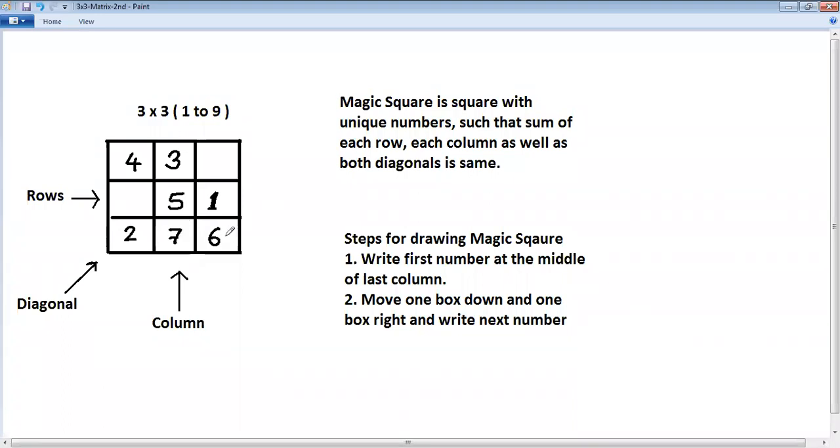For this box we don't use down, right rule. But now continue down, right. Down, right, out. So 8 will come here. Down, right, out. So 9 will come.